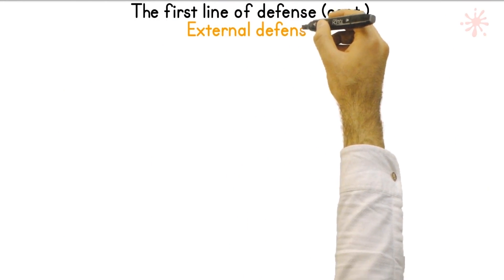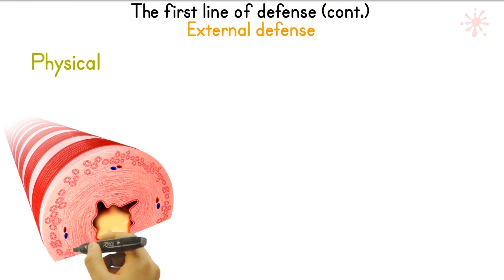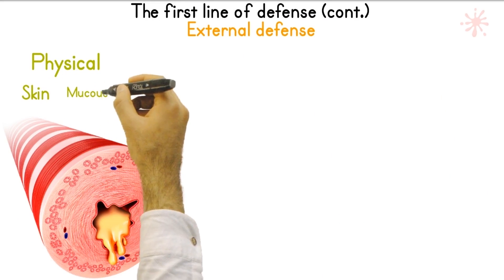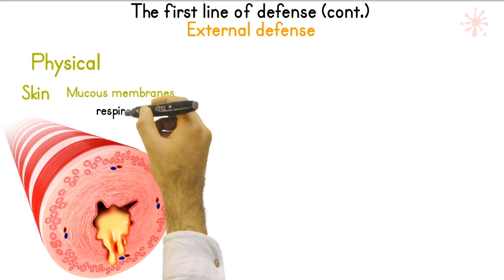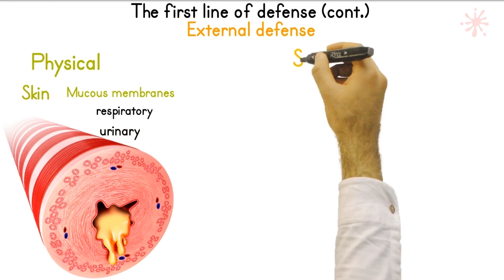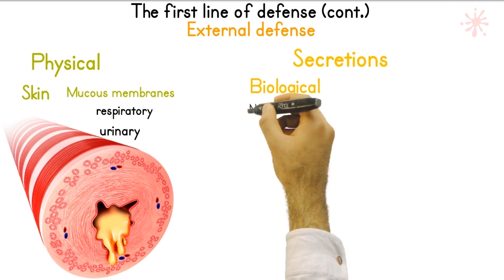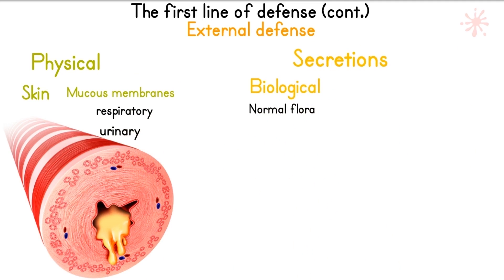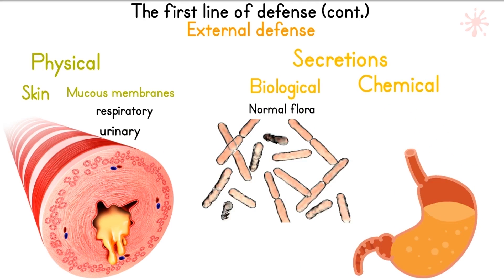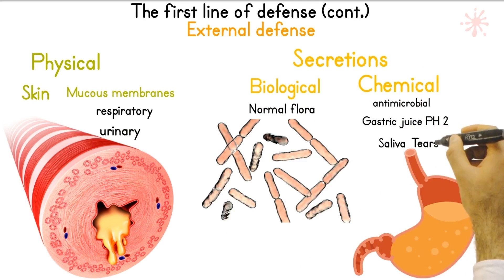Adaptive immunity generally develops by exposure to a pathogen or by vaccination. The surface barrier, or external defense, is the first obstacle a microbe will face. It is composed of intact skin and mucous membranes. Body systems open to outside environments — such as the respiratory and digestive systems — rely on their mucous membranes to flush invaders out, in addition to chemical secretions like gastric juice at a pH of only two, or lysozymes found on our skin.